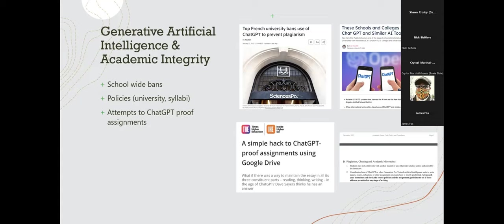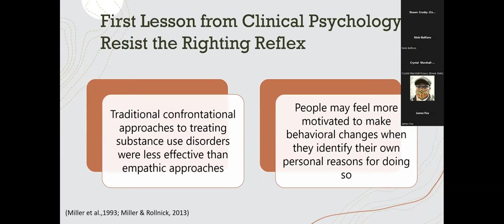My insights from the literature on motivational interviewing suggest that while there's a time and a place for instructing students when not to use Gen AI, how we communicate that message can actually backfire. There's research in motivational interviewing from early in Miller's career exploring the way that different confrontational approaches can send people in the opposite direction of where you want them to go. This comes from traditional treatments for substance use disorders, where many clinicians have this righting reflex — this tendency to want to tell clients, 'you need to stop drinking, here's how you do it.'